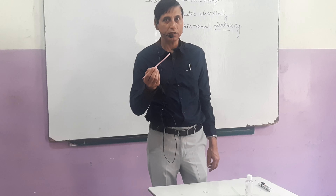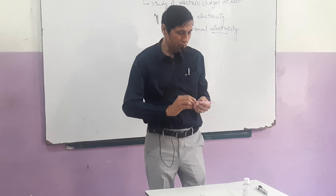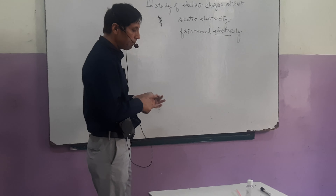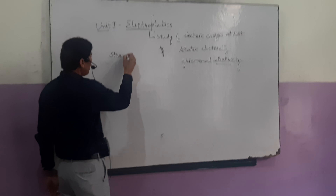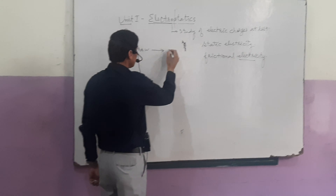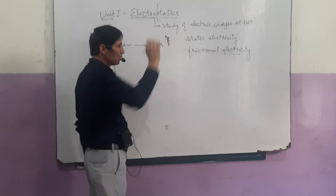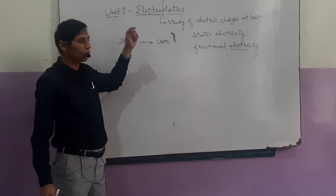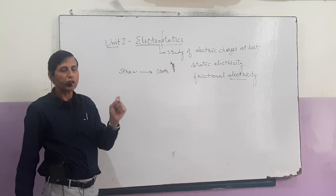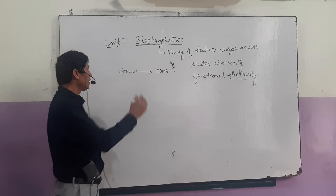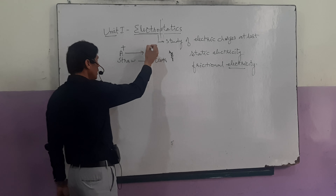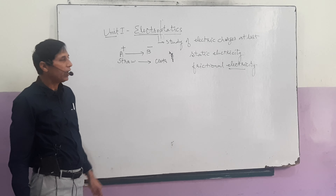Now we will try to understand what happens when the straw is rubbed with the cloth and becomes charged. Due to friction, some of the electrons from this straw are transferred to the cloth. The transfer of electrons from one body to another body gives charge to these bodies. Suppose electrons are transferred from body A to body B — then body A will become positively charged and body B will become negatively charged.